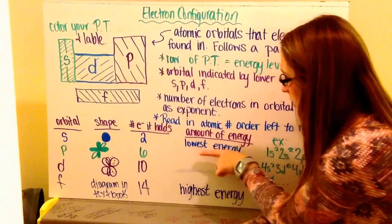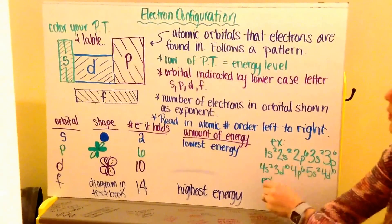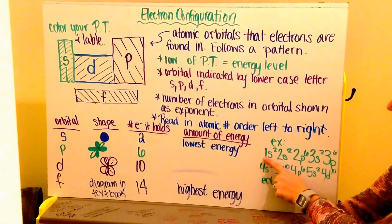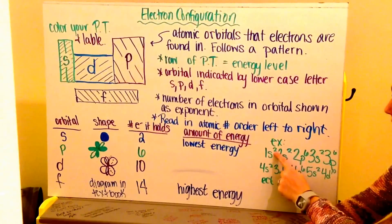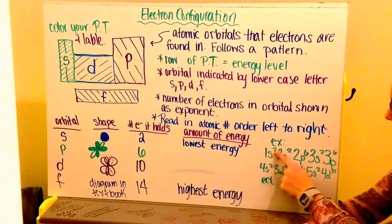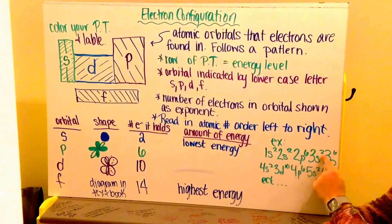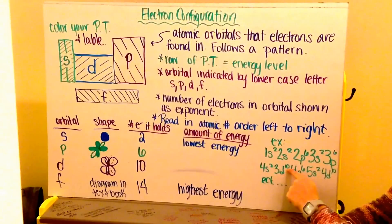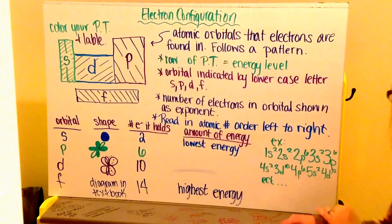Notice that the S orbital is the lowest energy and the F orbital is at the highest energy. When we write our electron configuration, we start with the row of the periodic table, then our energy orbital, and raise the number of electrons in that section. An example would be: 1s2, 2s2, 2p6, 3s2, 3p6, 4s2, 3d10, 4p6, 5s2, 4d10. And we could keep going on and on.